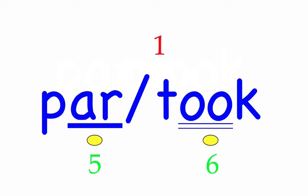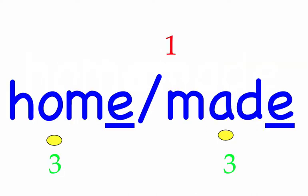Homemade. I made some homemade apple pie. First syllable: home, three sounds, H-O-M. Second syllable: made, three sounds, M-A-D. Home, made — another compound word. Mark the word.